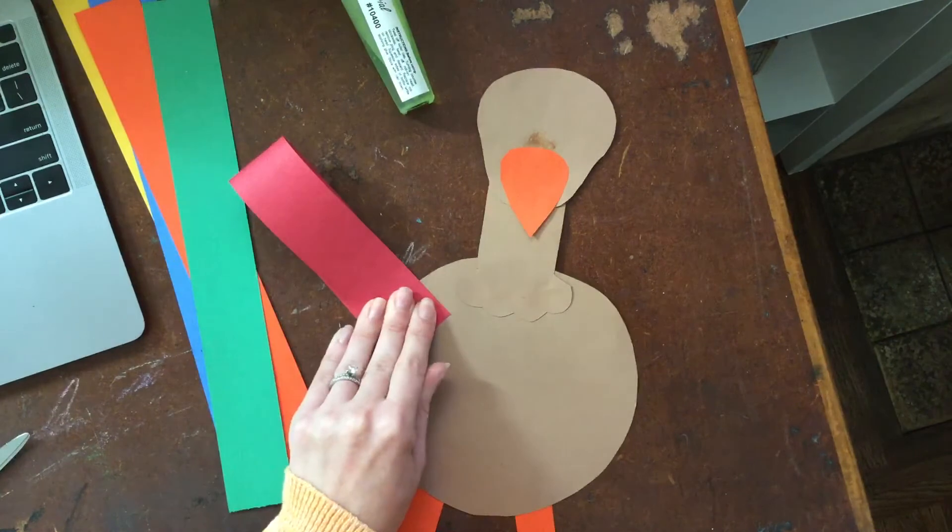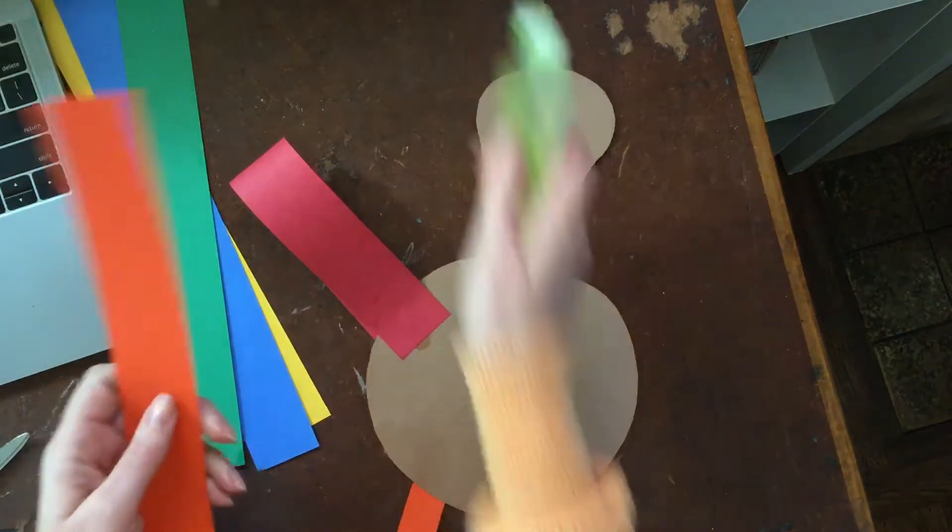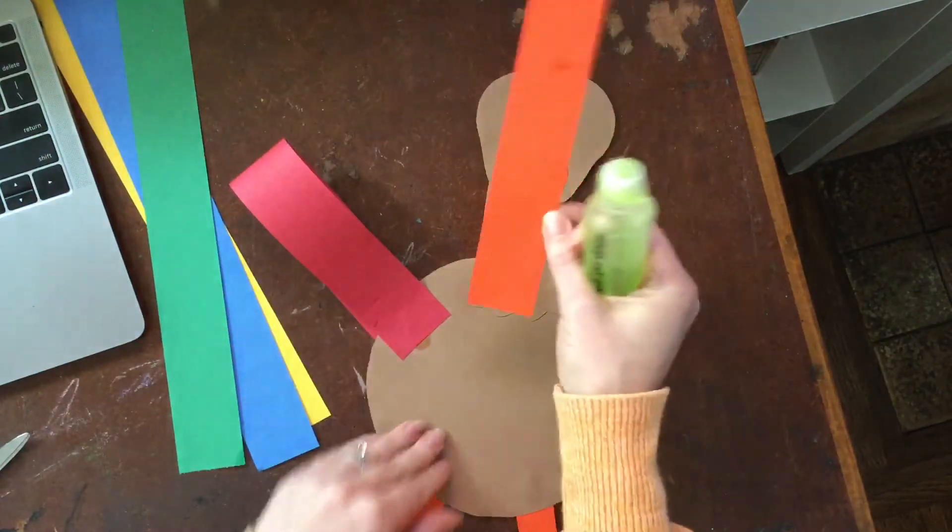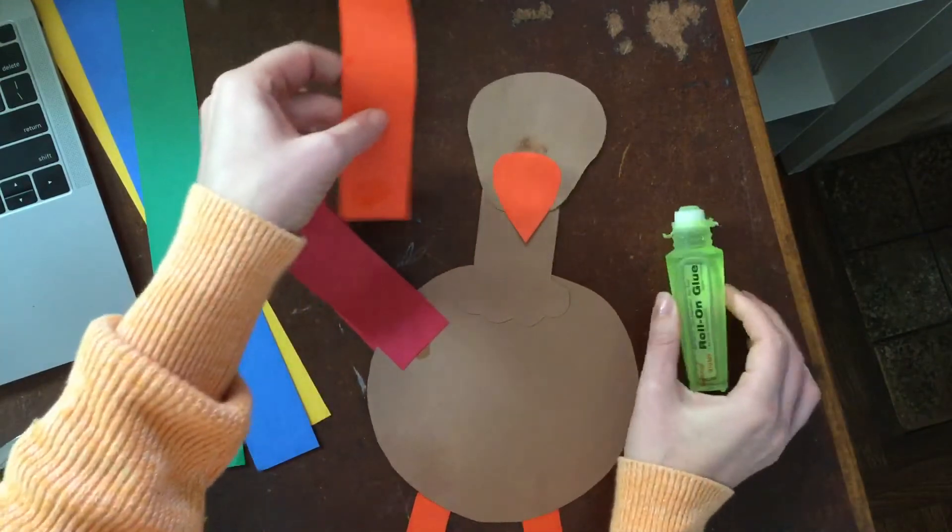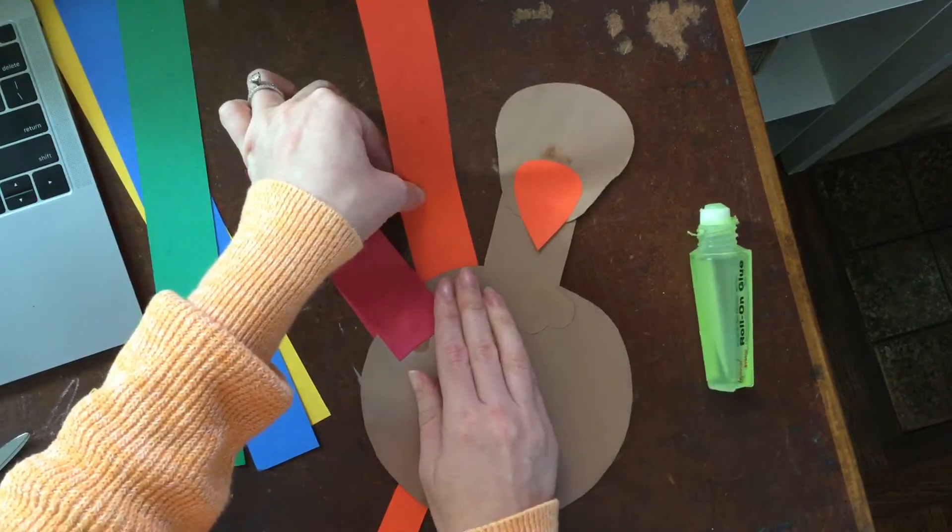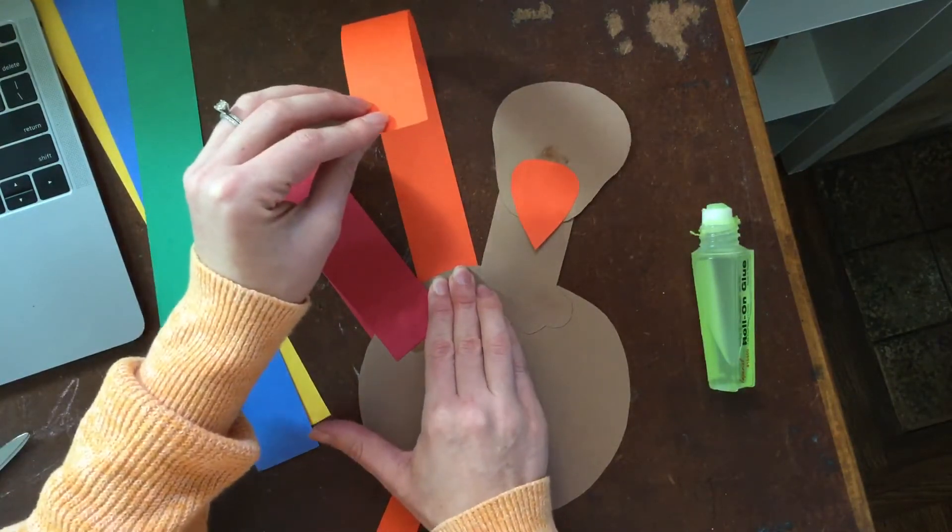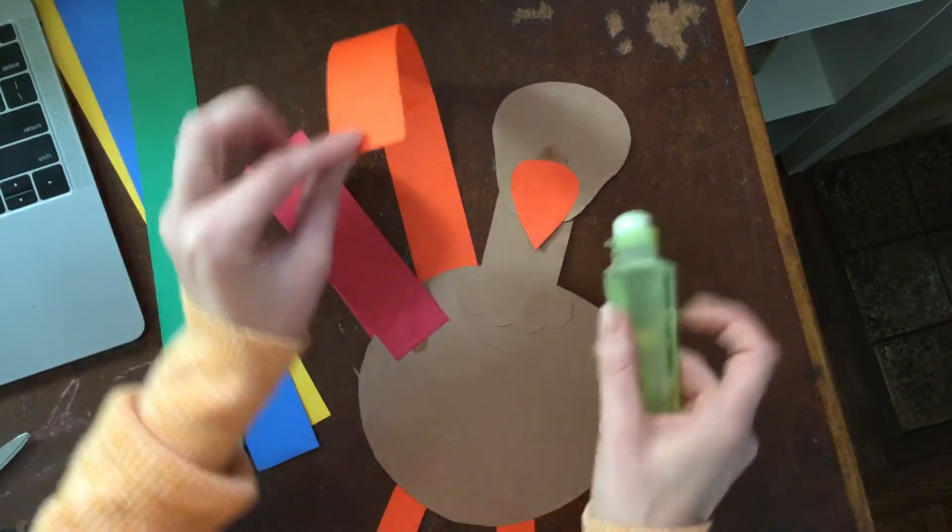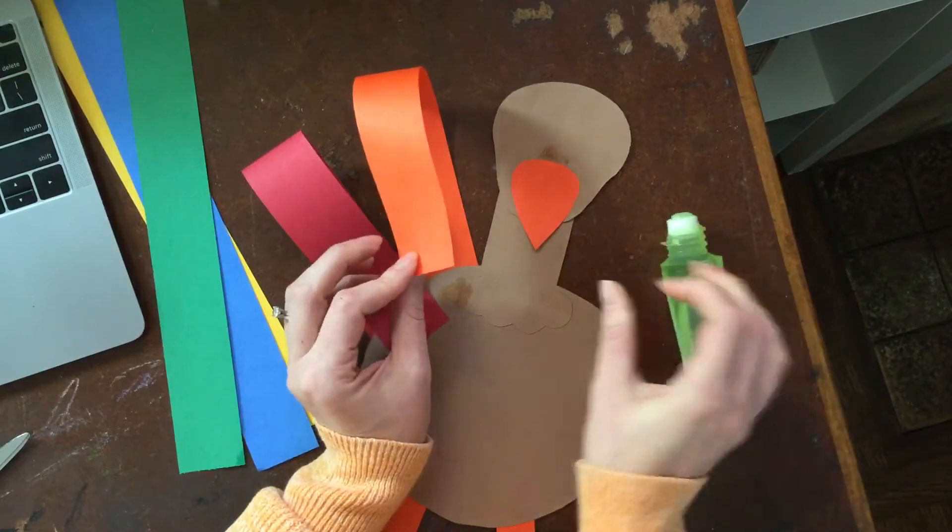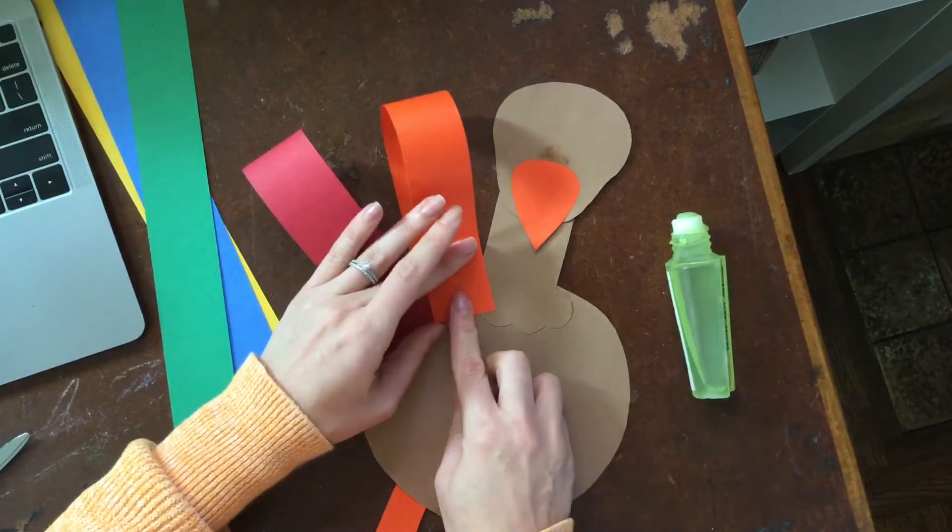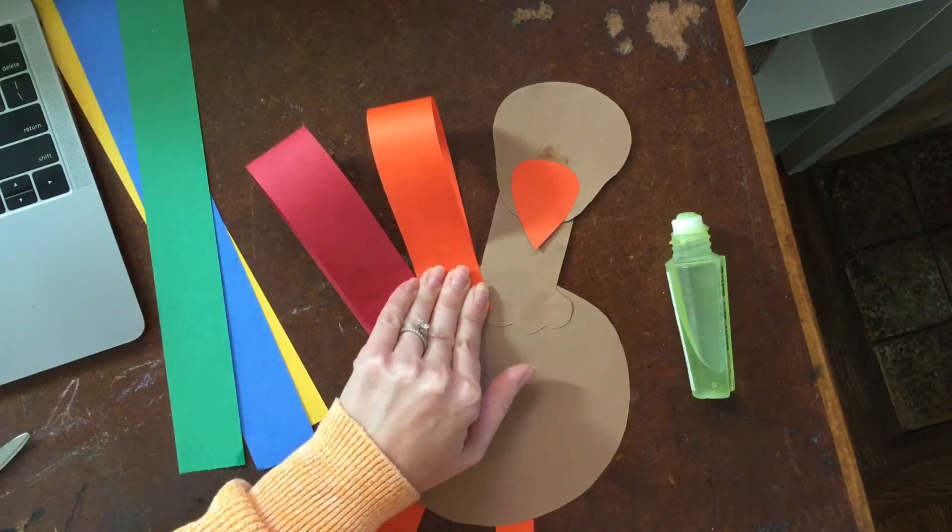And you don't have to do rainbow order. You can if you want but we're just going to make sure we get all the feathers on. Stick it behind. Put a little glue on the front. Take the end and bend it and glue it to the front.